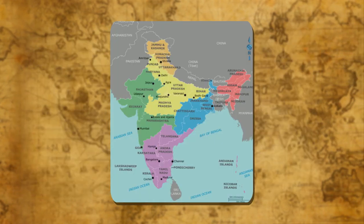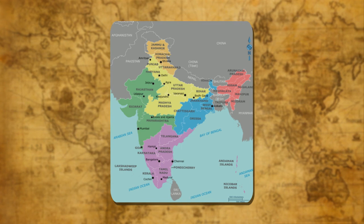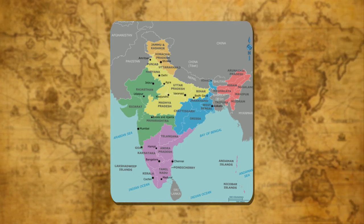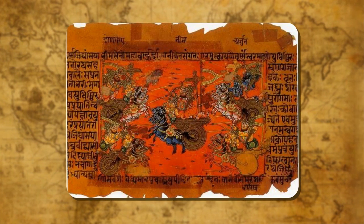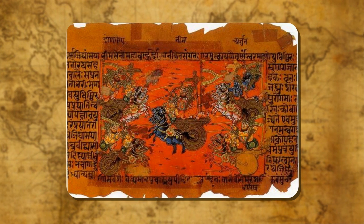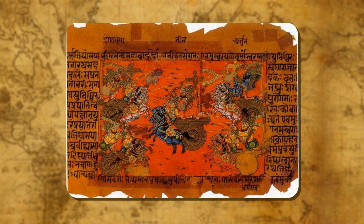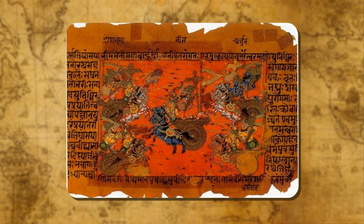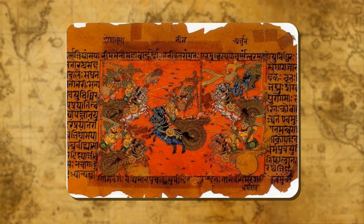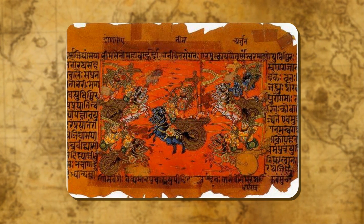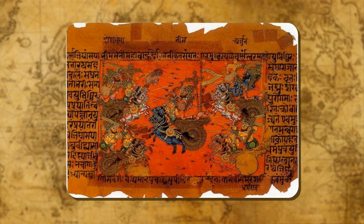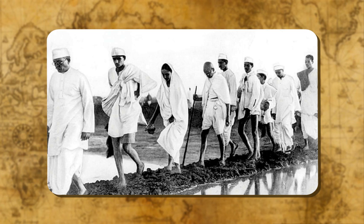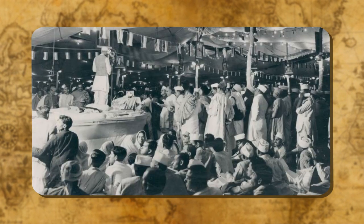Many factors promote the unity of India. Geographical conditions have made India a single unit despite physical, climatic, and regional differences. In ancient religious literature, the entire country has been mentioned under one name — Bharatvarsha — establishing that India was considered a single country even in ancient times. Our freedom struggle also showed the spirit of common brotherhood as all communities of India united against British rulers.